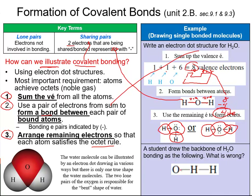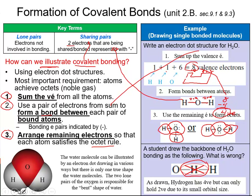Consider this question: a student drew this backbone for step two for water. What's wrong with it? If you draw a circle around hydrogen, you'll notice it shows four electrons around it. You can't have four valence electrons around hydrogen because it's small — it wants to be like helium, so it can only hold two. That's why hydrogen is usually a terminal atom, always on the ends of the connections.